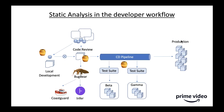We're not just using Facebook's Infer — we're also building our own custom analyzers. We built a product called Coast Guard, which is also run by Bugbear and listens for code reviews. Coast Guard looks for different things — not null pointers, but results very specific to Prime Video code. We're looking for integration bugs between different architectural boundaries at critical points in the stack.